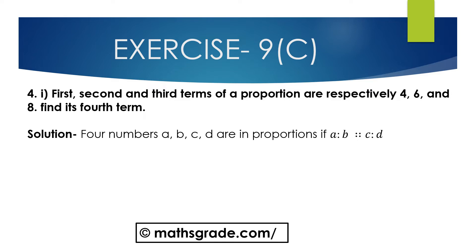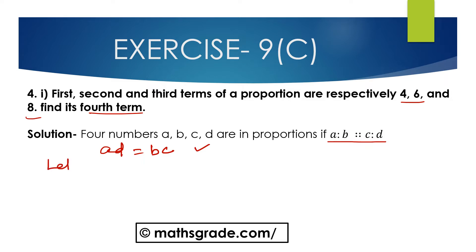We will solve question number 4, first bit. The first, second and third terms of a proportion are respectively 4, 6 and 8. Find its fourth term. We know if four numbers a, b, c, d are in proportion, then the product of the extremes is equal to the product of the means: ad = bc. Let the fourth term be x.